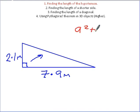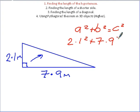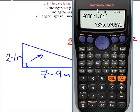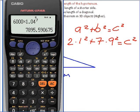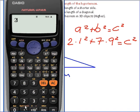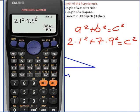So A squared plus B squared equals C squared. A is 2.1, B is 7.9, and I don't know what C is — that's what I'm trying to find out. Once you've learned the formula, it becomes really simple to do these questions in the exam. So: 2.1 squared — remember this button here will square any number — plus 7.9 squared. If you ever get a fraction, press this SD button to get a decimal. So the answer is 66.82.